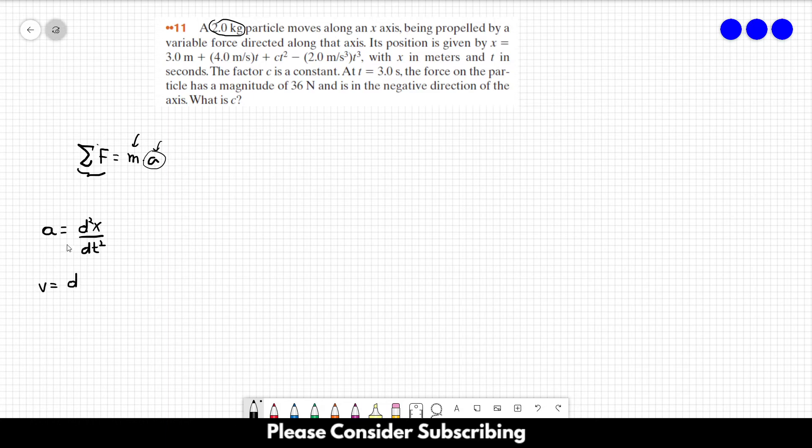So let's derive it one time. When you derive the position one time, we get its velocity. So this is dx over dt, and gives us 4 plus 2ct minus 6t squared. So this is the velocity.